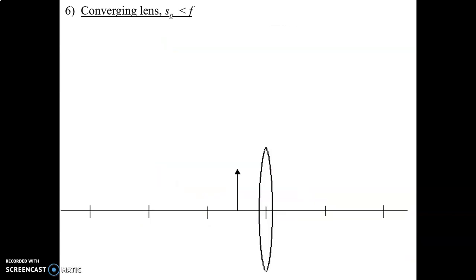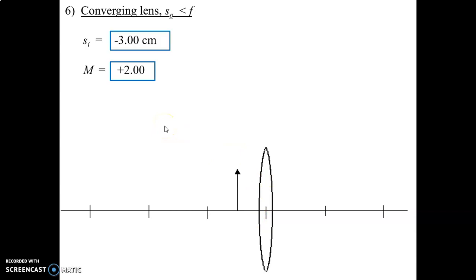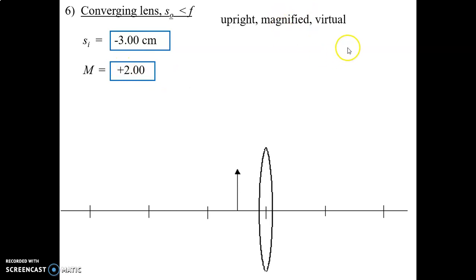Let's go on to problem six. Same deal — we're going to look at the math first, make our predictions, then we'll do the ray diagram. Here we have a converging lens with the object within the focal length. The math should have worked out to SI being negative 3.00 centimeters, magnification of positive 2.00. Pause the video and make your predictions. Hopefully you predicted upright, magnified, and virtual. A negative image distance is upright and virtual — they always go together — and magnification being larger than one means it's going to be magnified.